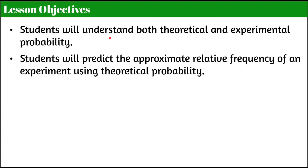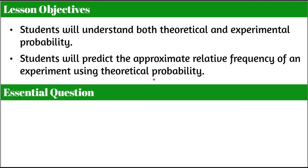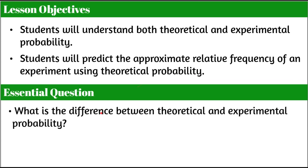Our objectives are: you, the student, will understand both theoretical and experimental probability. You will also be able to predict the approximate relative frequency of an experiment using theoretical probability. The essential question to think about today is: what is the difference between theoretical and experimental probability?